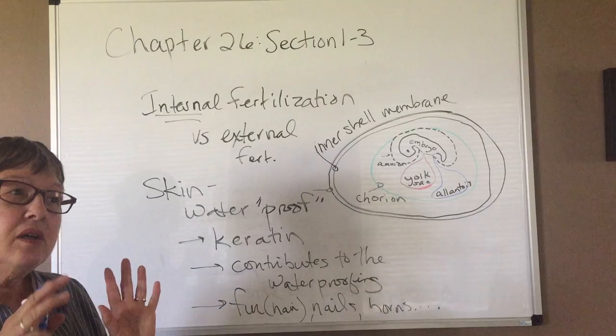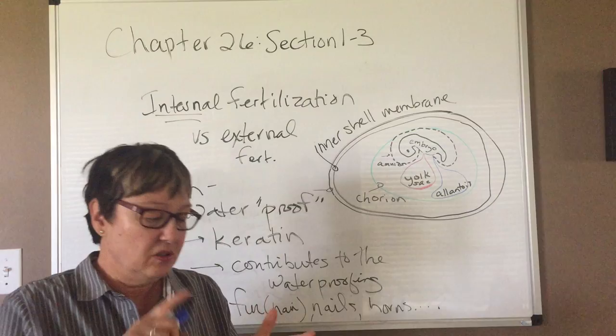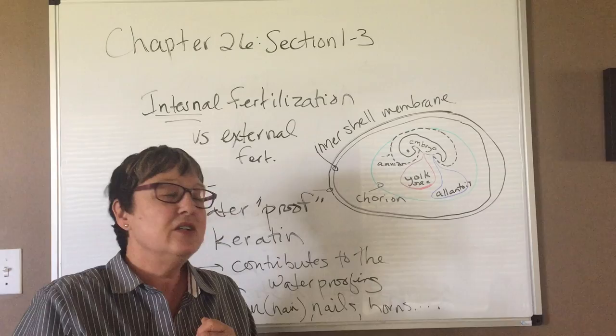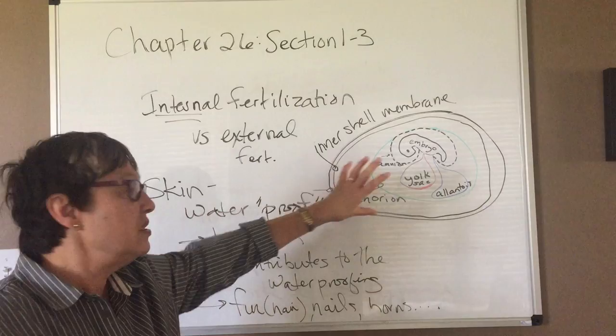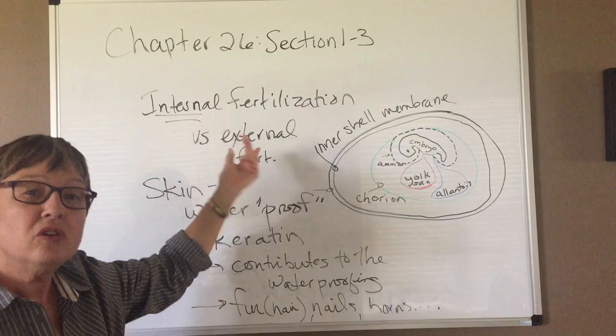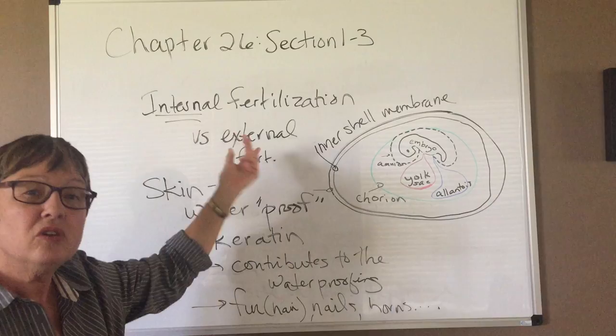Just to summarize, we have a group of organisms—the reptiles, birds, and mammals—that are all much more adapted to a land existence compared to the amphibians, and they show a number of adaptations. Certainly foremost among them is the development of extra membranes that surround the embryo and an outer shell that surrounds the embryo, and then internal fertilization and the development of a skin that is watertight or waterproof.